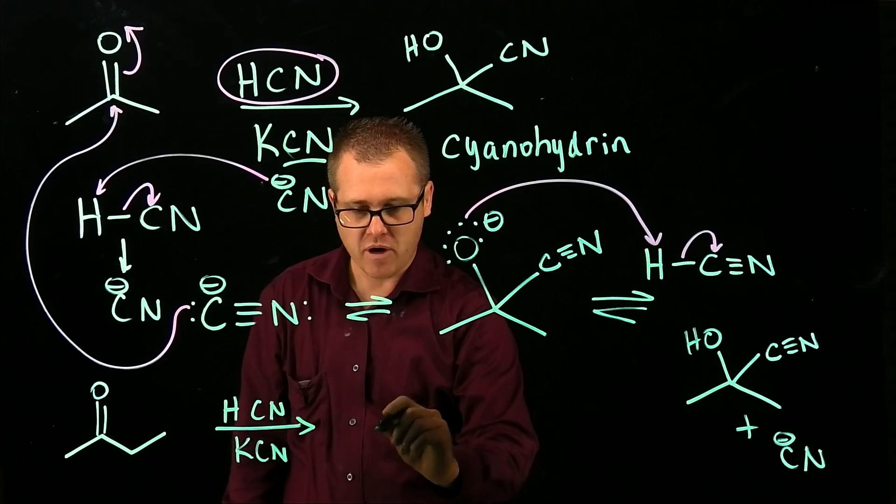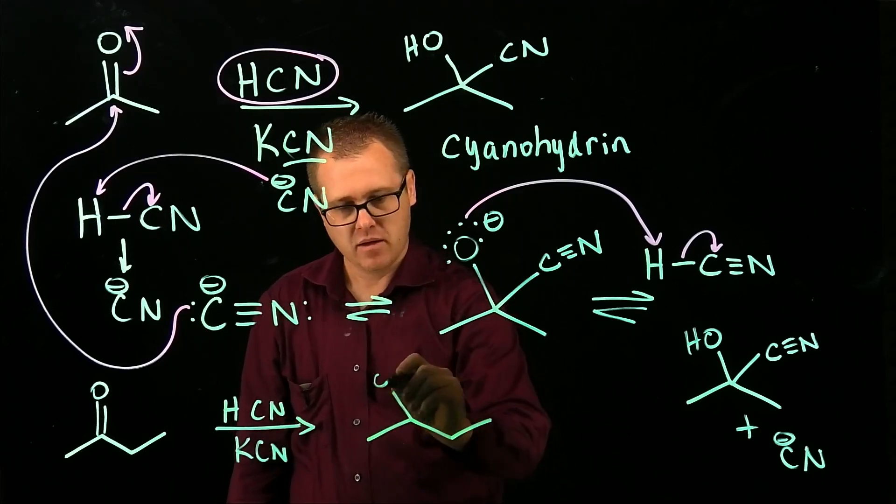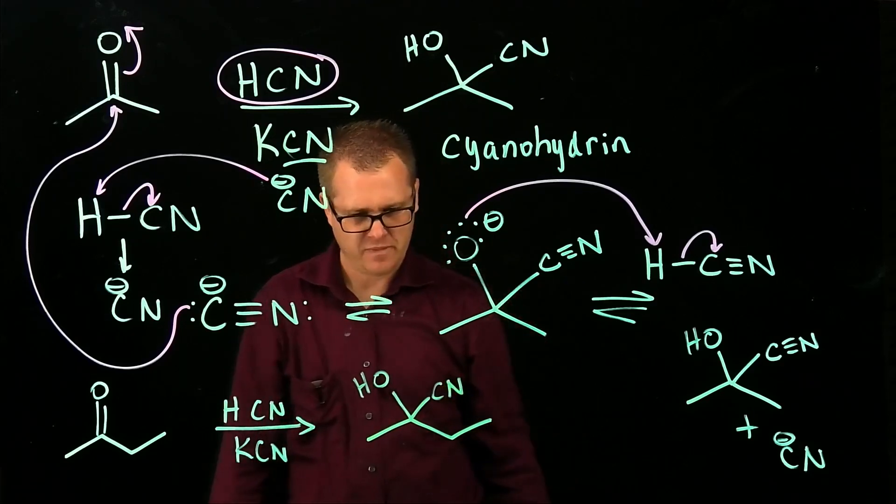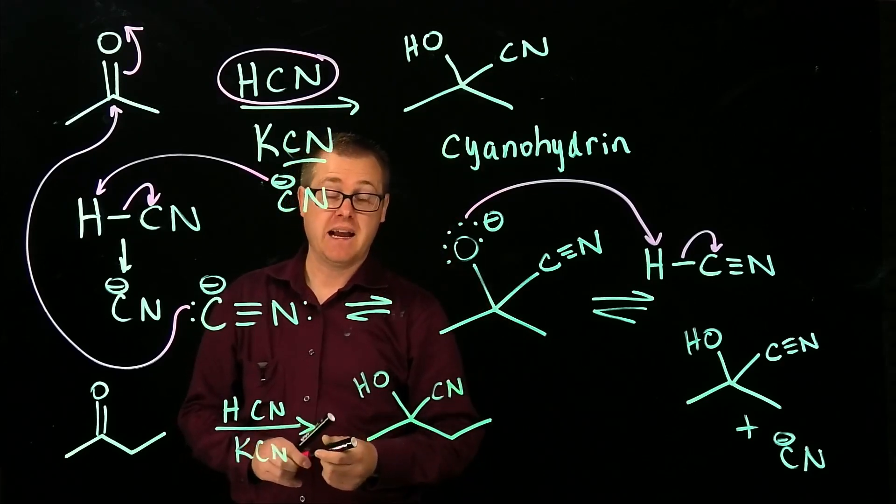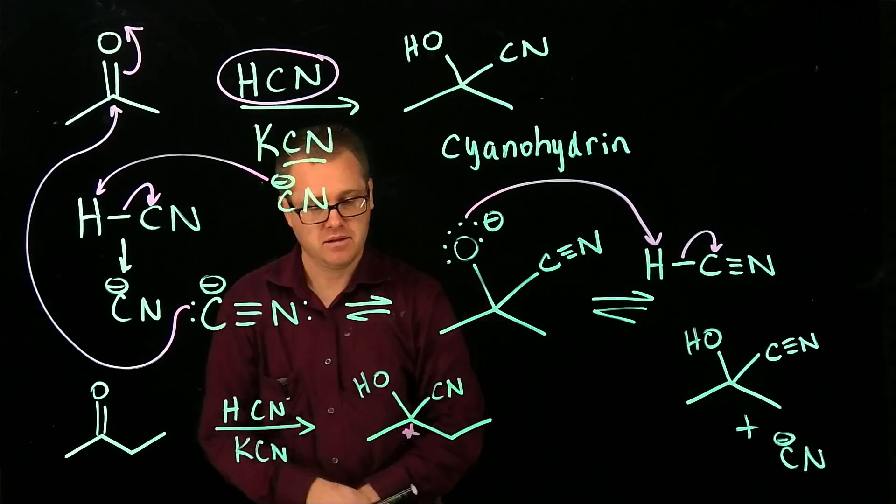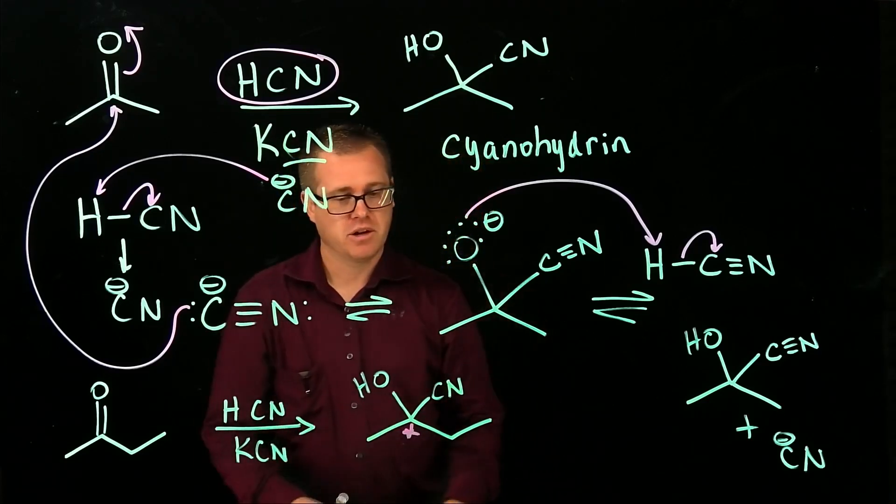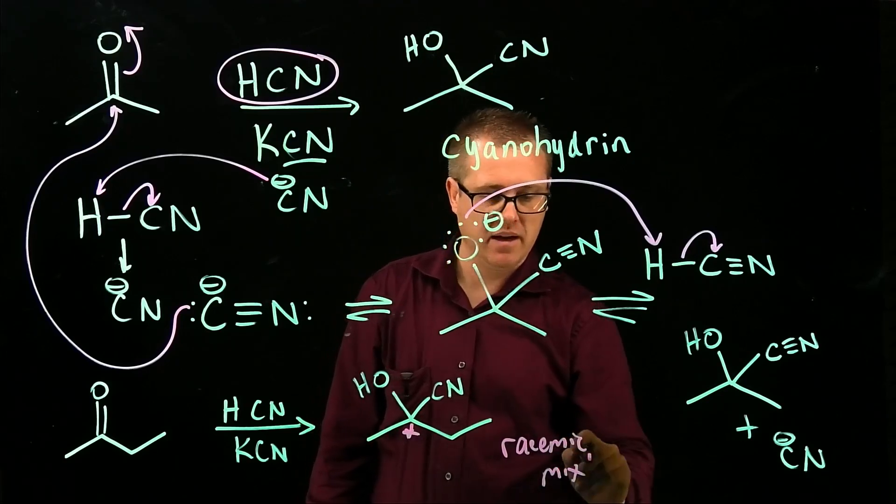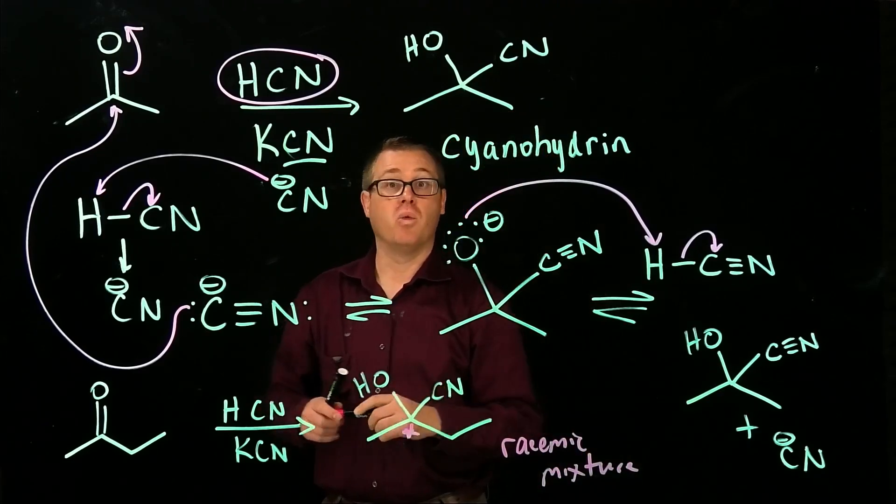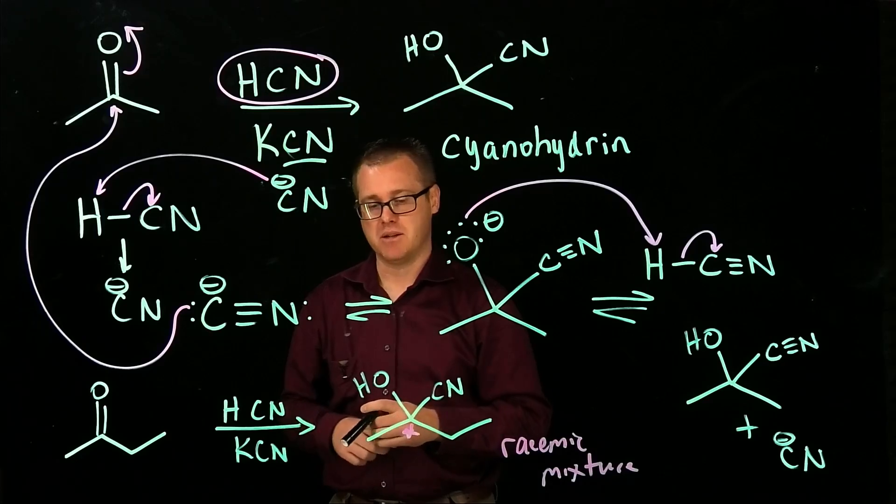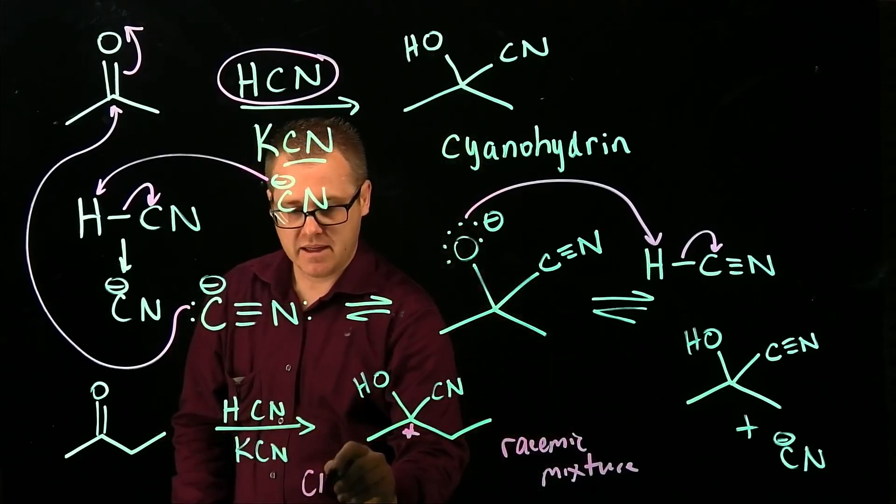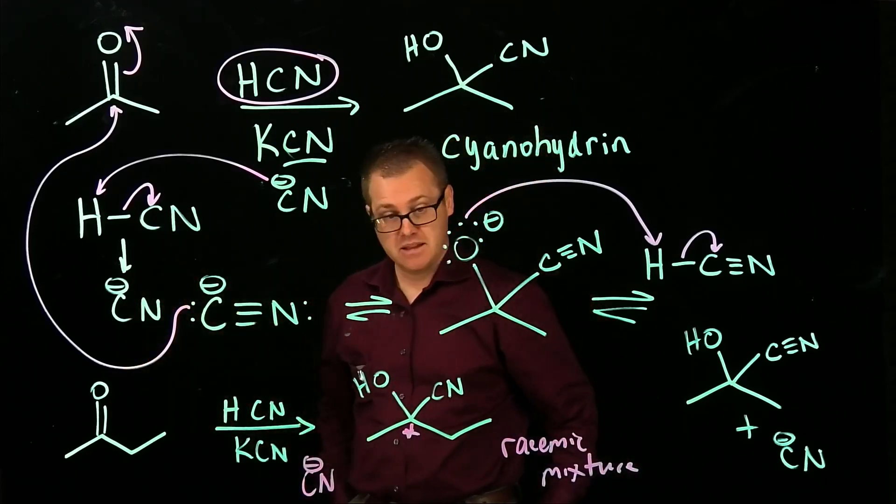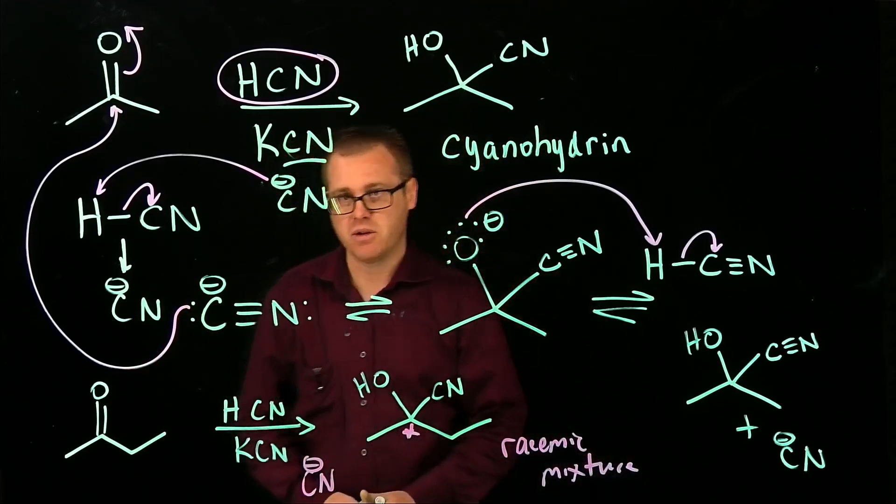Once again, when you form your product, your cyanohydrin here, what do we have to always, always be careful of? What did I generate? A stereocenter. So you're going to have a racemic mixture. But you need to be aware it's not just going to give you one product. You created a stereocenter. So the attacking species can attack from the front face or the back face. And that's why you're going to get that racemic mixture. Always watch out for that.